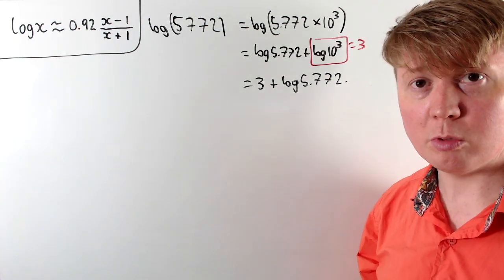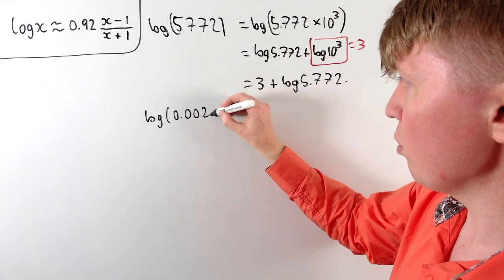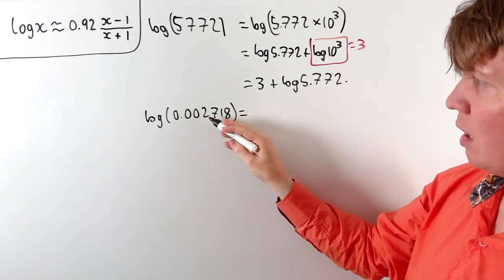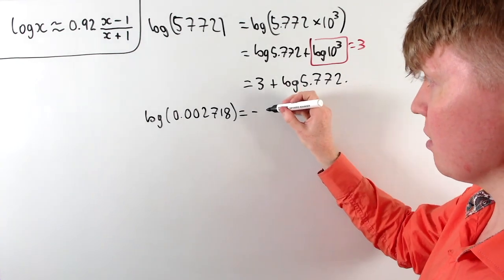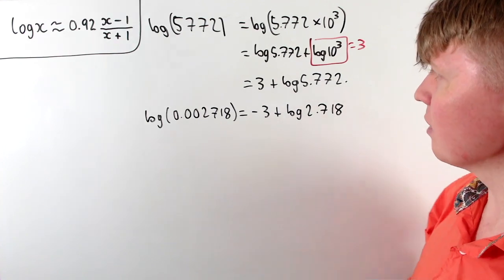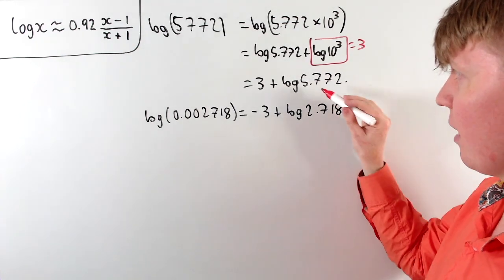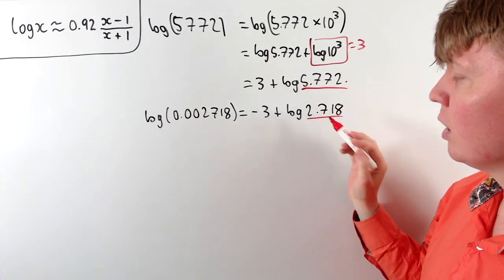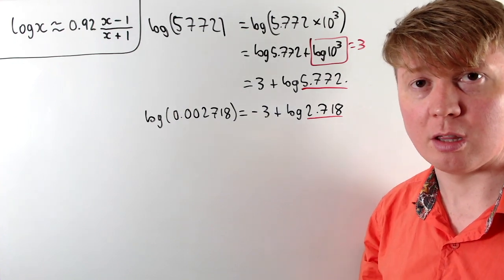Similarly, if we're working with a small number — say log of 0.002718 — we can rewrite this as 2.718 times 10 to the negative 3, giving us negative 3 plus log of 2.718. So we only really need our approximation to be good for values of x between 1 and 10. By converting to standard form, we're only interested in the logarithm of a number between 1 and 10, and we just add or subtract some constant.